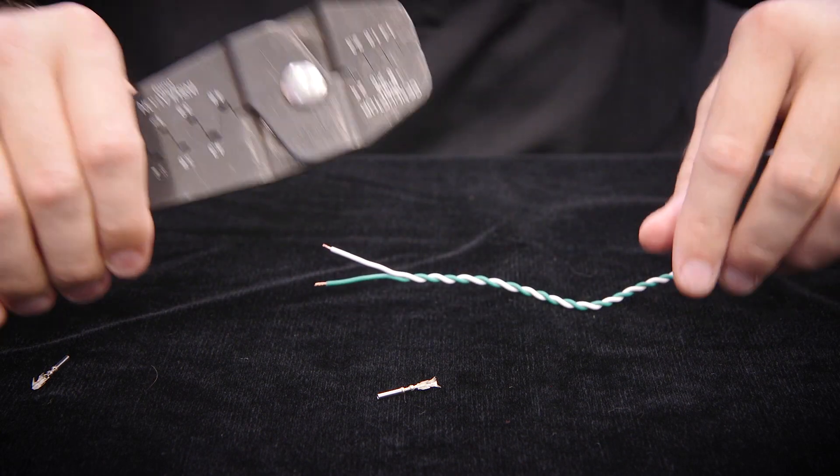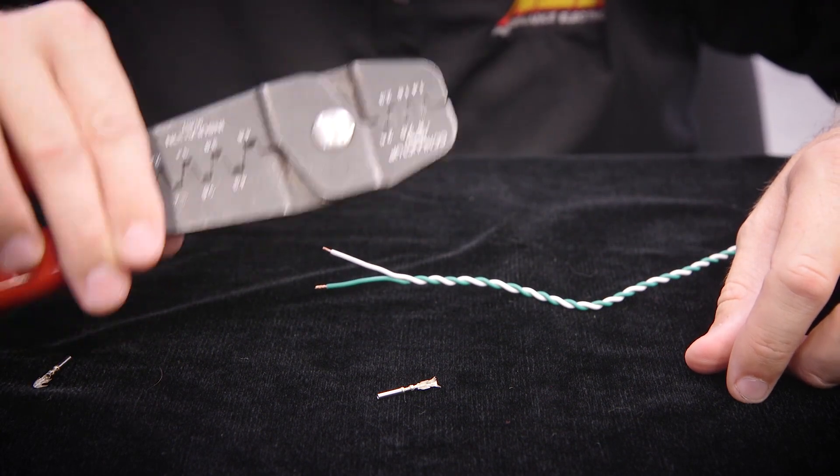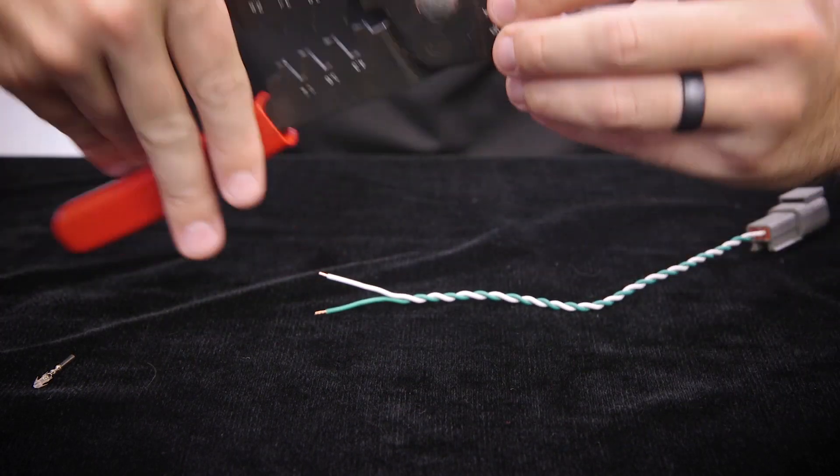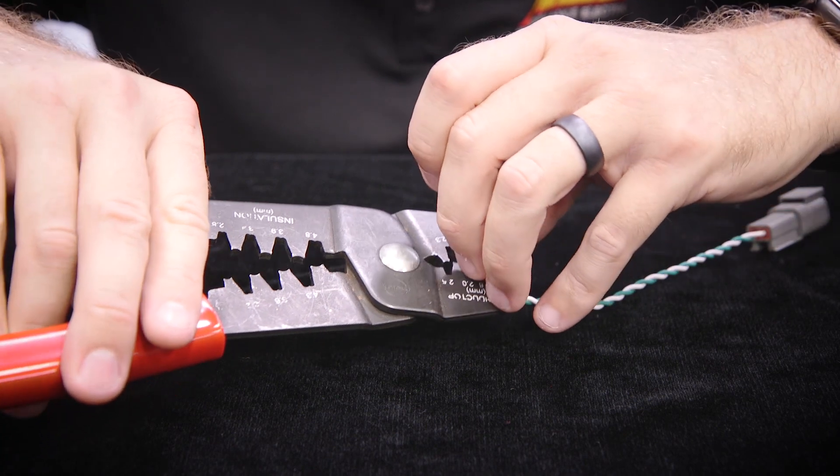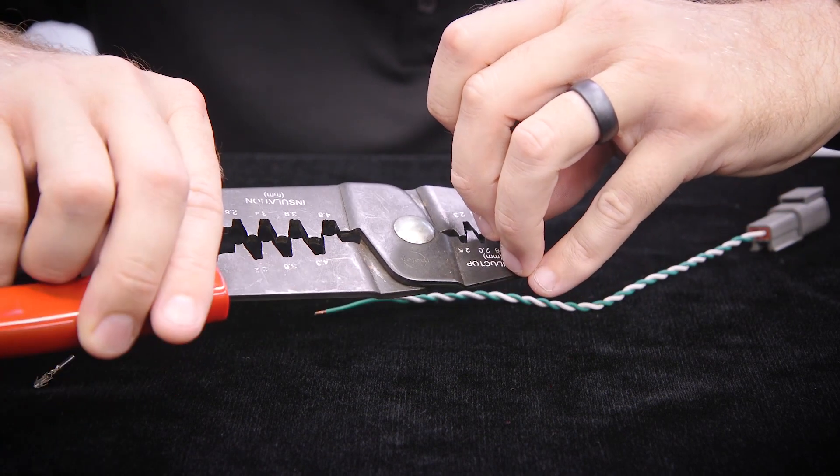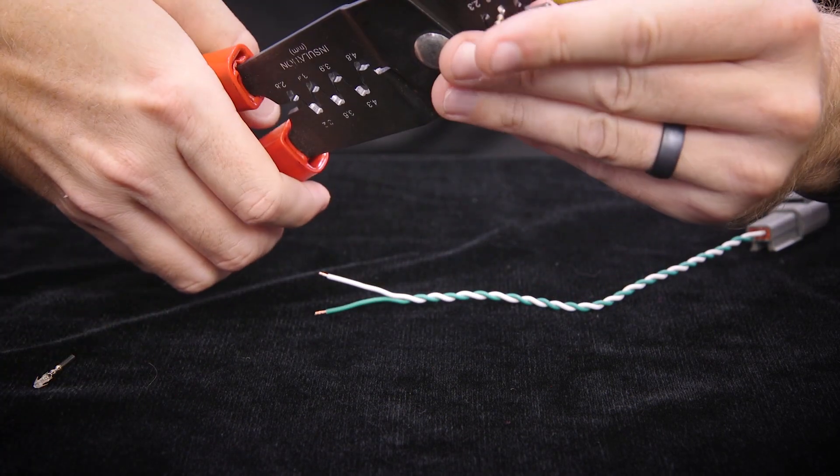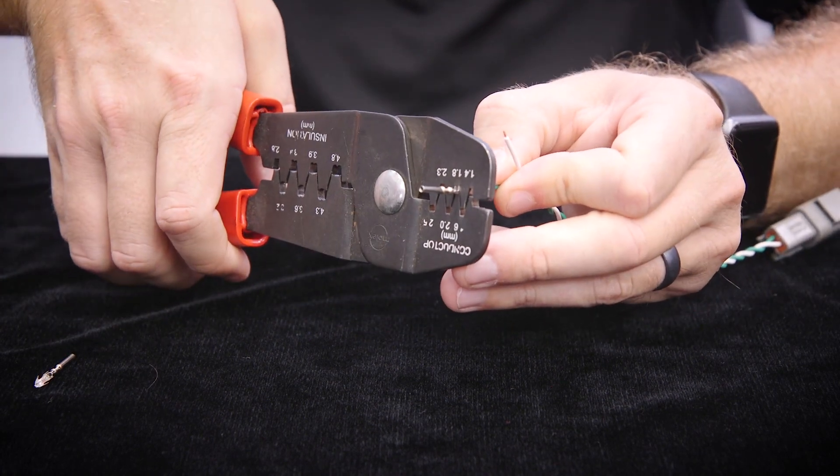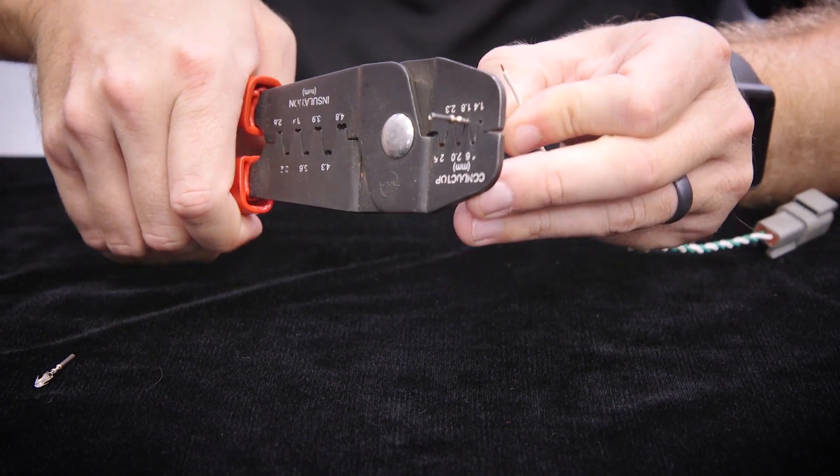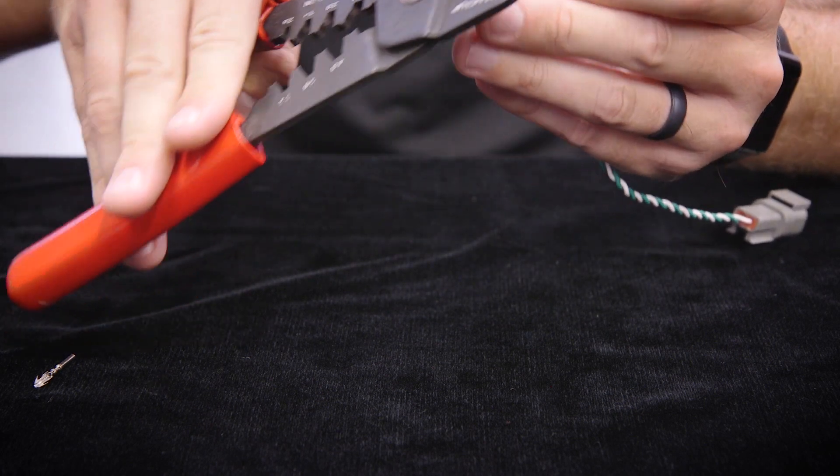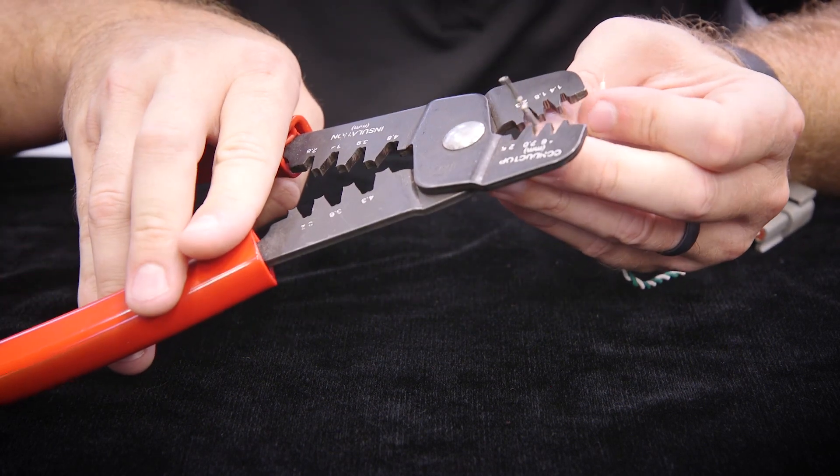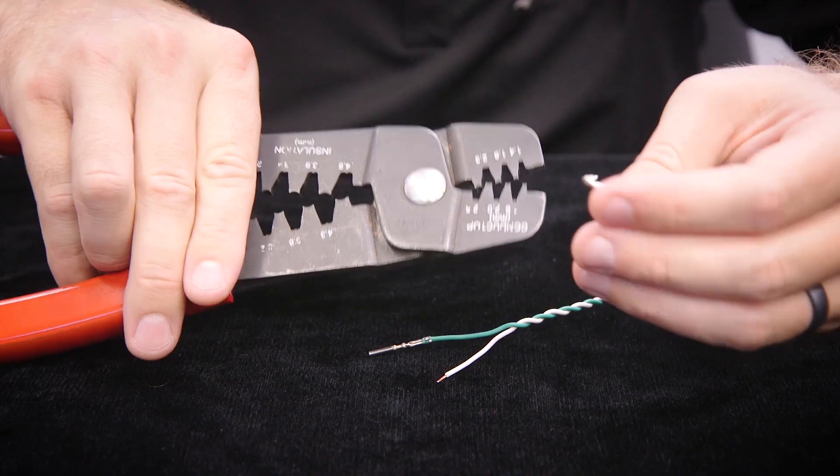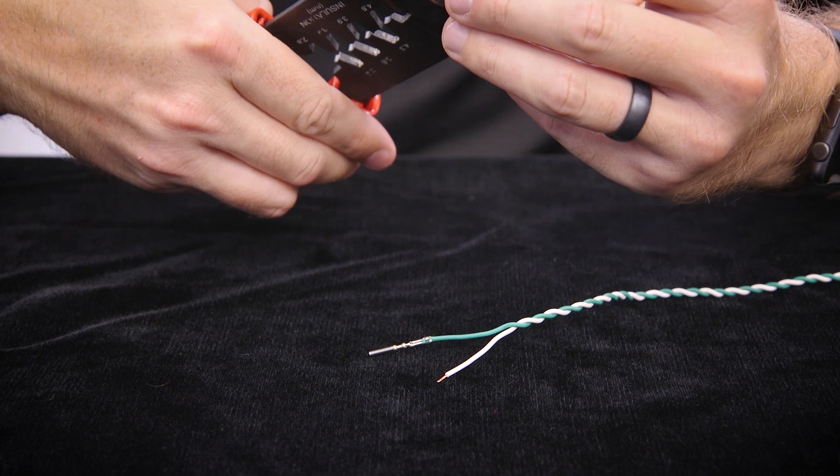Now we're going to take some universal butterfly crimping tools and go ahead and crimp to our CAN low. And we're going to do the same thing with our CAN high wire.